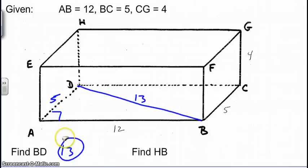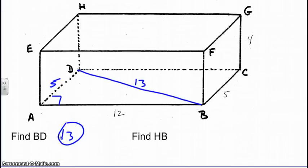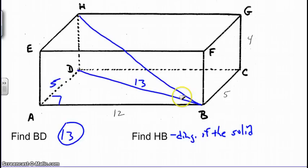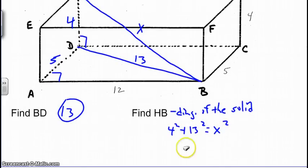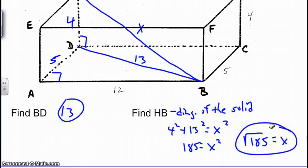And last but not least, we're looking for HB. Now HB is the diagonal of the solid. So that is this line right here. So now we know DB is 13. We'd have a right angle at HDB. HD is congruent to GC, which is 4. We'll call this X. Using Pythagorean theorem, we have 4 squared plus 13 squared equals X squared. So 4 squared plus 13 squared would give us 185. Square root both sides, and that does not reduce. Therefore, HB would be square root of 185.